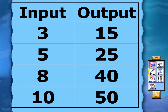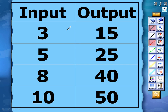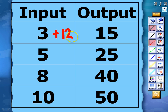Let's take a look at our first input and output table. We can see the input starts at 3 and increases to 15. Since it's increasing, we have two operation options: multiplication or addition. So we need to figure out what is happening to 3 in order to make it 15. I can add 12 to get 15, or I could multiply by 5 — so I have two options.